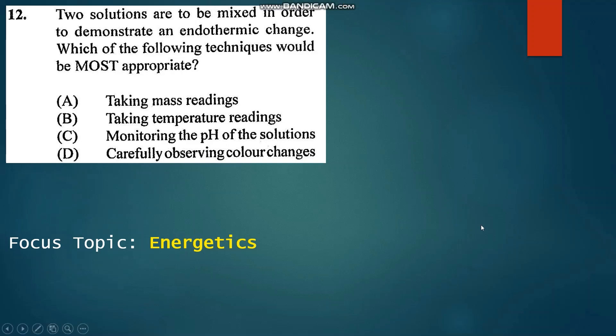Number 12: Two solutions are mixed in order to demonstrate an endothermic change. Which of the following techniques would be most appropriate? When an endothermic reaction takes place, heat is absorbed from the surroundings and so there will be a change in the temperature. Therefore, taking temperature readings would be most appropriate to demonstrate that an endothermic process has taken place. So that's B.